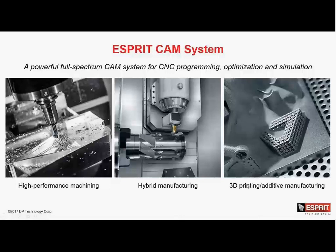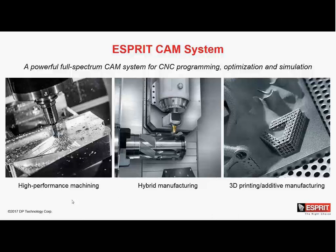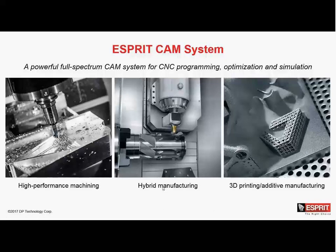As a CAM system, Esprit does high-performance machining, including 2 to 5-axis milling, 2 to 22-axis turning, high-speed simultaneous 3, 4, and 5-axis toolpath, Swiss-turn, mill-turn, and B-axis multitasking machines. As of recently, Esprit also does hybrid manufacturing — combining additive and subtractive processes, direct energy deposition, and direct metal deposition machines. In addition, it supports 3D printing and additive manufacturing: part-to-build workflow, quickly moving from CAD file to a printed part, powder bed, binder jetting, and material jetting printers.